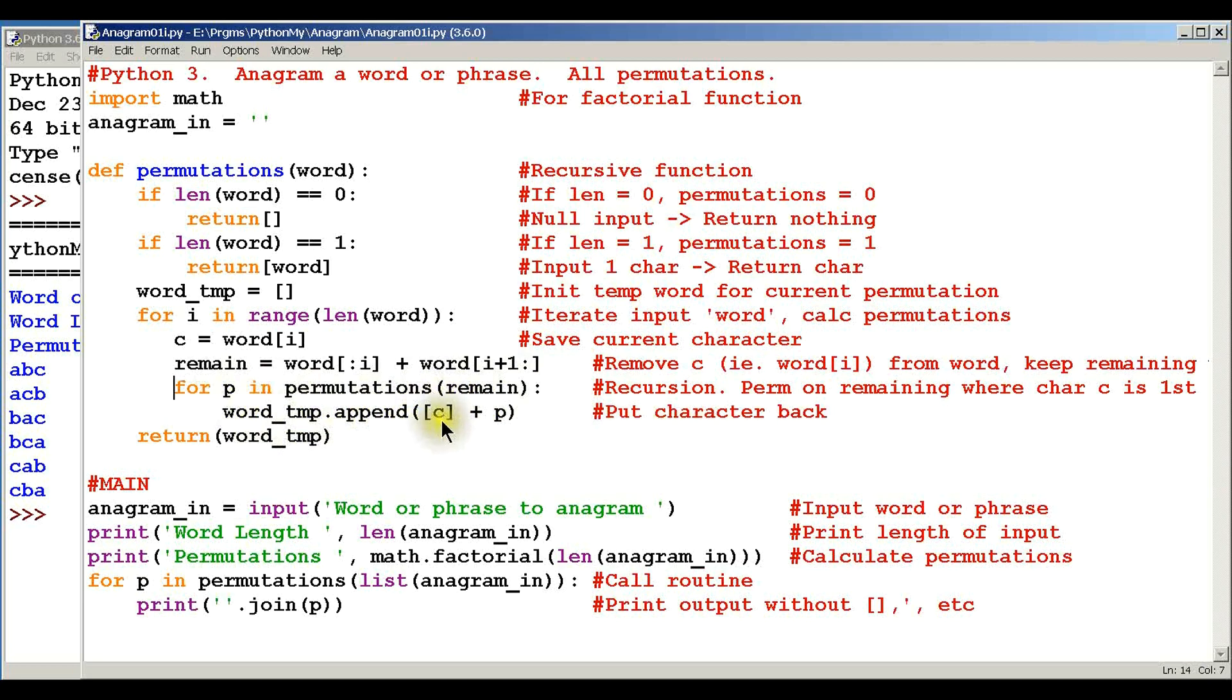We're going to put the character back. So first we take it out, we move things, and we put it back, and then we're going to return this temporary word. And that is the recursion routine to walk through all these.